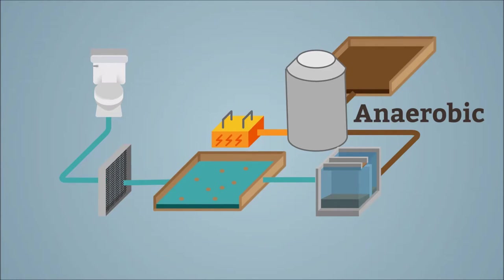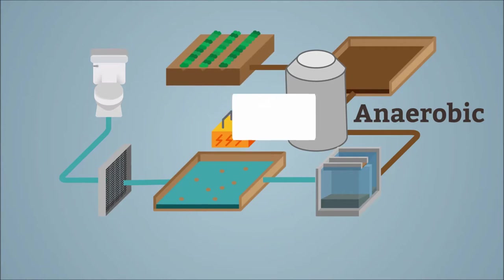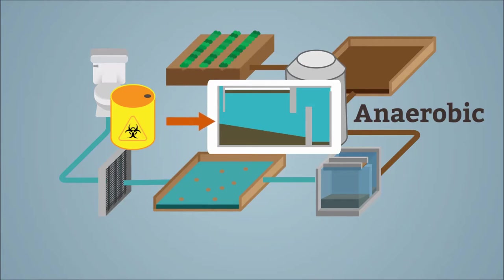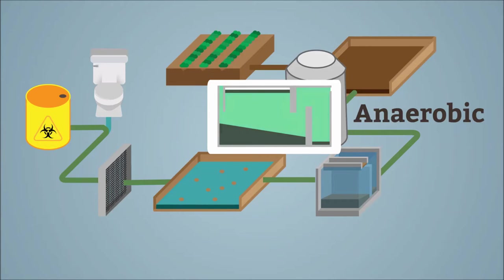Remaining sludge is dried and normally can be used as a valuable fertilizer. However, if industrial waste is diverted into the domestic sewers, the sludge may be contaminated by heavy metals and other pollutants, and this valuable fertilizer has to be dumped in landfill.